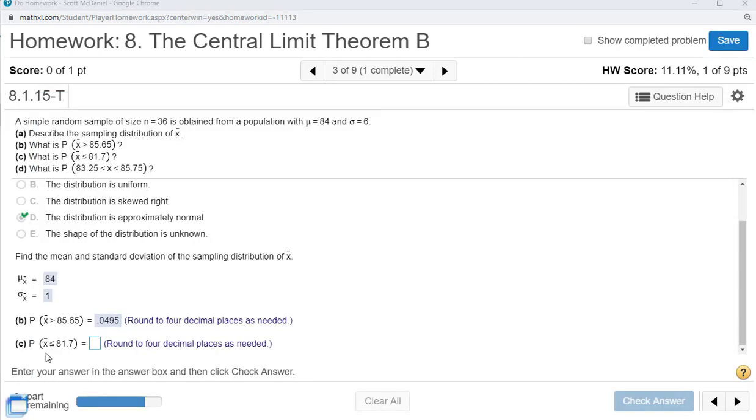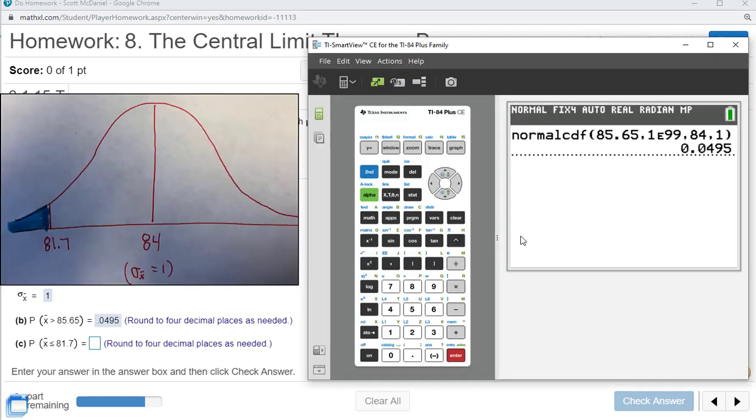For part C, find that the mean is less than 81.7. I recommend pausing the video here, trying this one out, making sure you can do it.